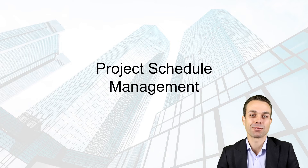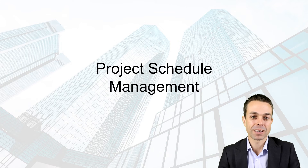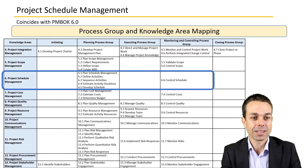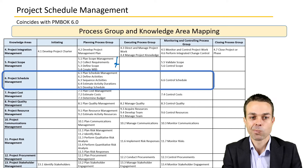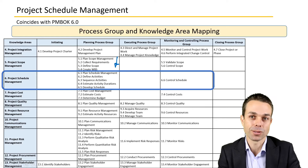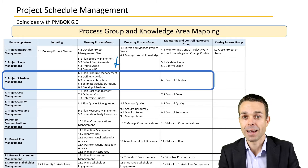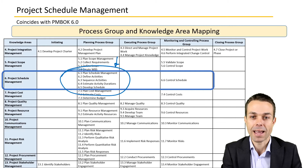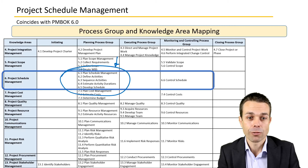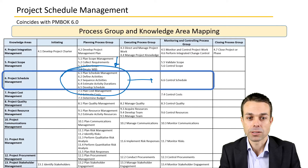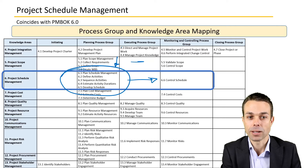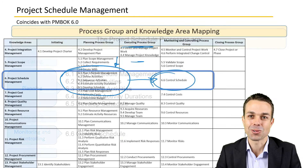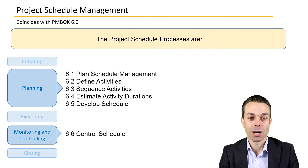Hi everyone, welcome back to these processes from the Project Management Body of Knowledge. This one in particular is Project Schedule Management — an overview of the entire schedule management. We've gathered our scope for our project and now we're starting to put that into a schedule to see how and when these activities and deliverables will be completed. Most of this is happening in the planning phase, and then we just need to control that schedule in execution.